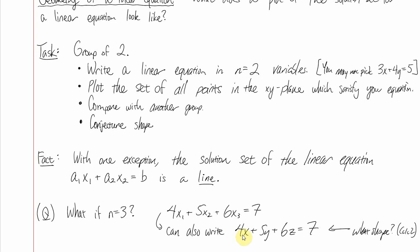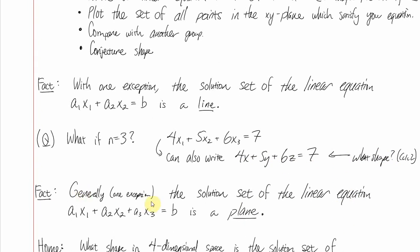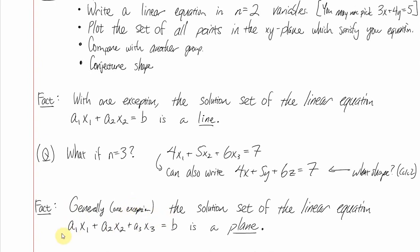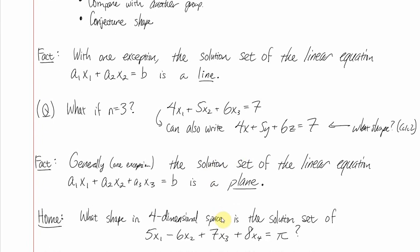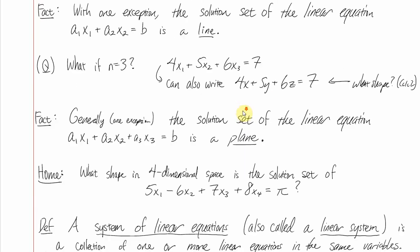I'd challenge you to think about what you get in four-dimensional space. Consider 5x₁ − 6x₂ + 7x₃ + 8x₄ = π. What does that look like graphed in four-dimensional space? See if you can get hints from the lower-dimensional examples: in 2D you get a line, in 3D you get a plane. Think about that at home.